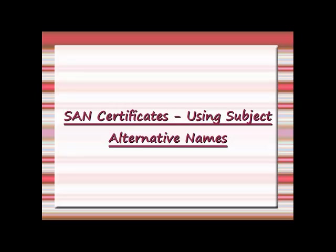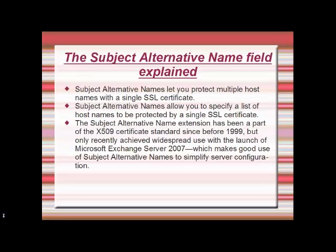SAN Certificates using subject-alternative names — the subject-alternative name field explained. Subject-alternative names let you protect multiple host names with a single SSL certificate, allowing you to specify a list of host names to be protected. The subject-alternative name extension has been a part of the X.509 certificate standard since before 1999, but only recently achieved widespread use with the launch of Microsoft Exchange Server 2007, which makes good use of subject-alternative names to simplify server configuration.